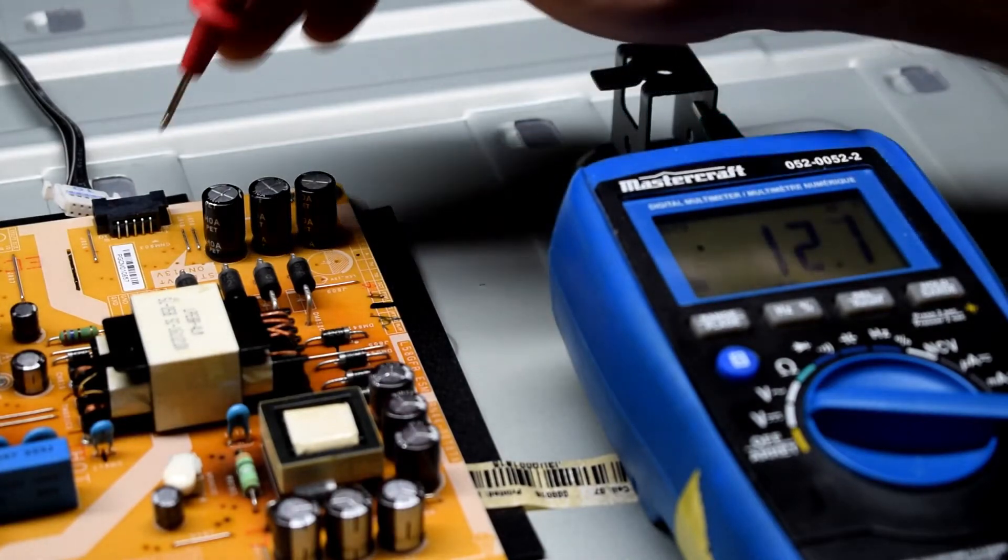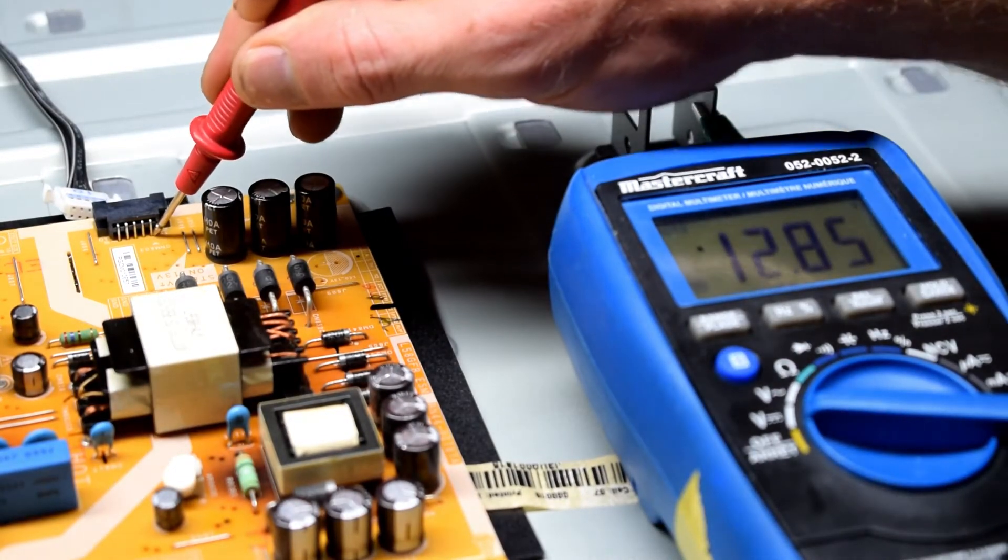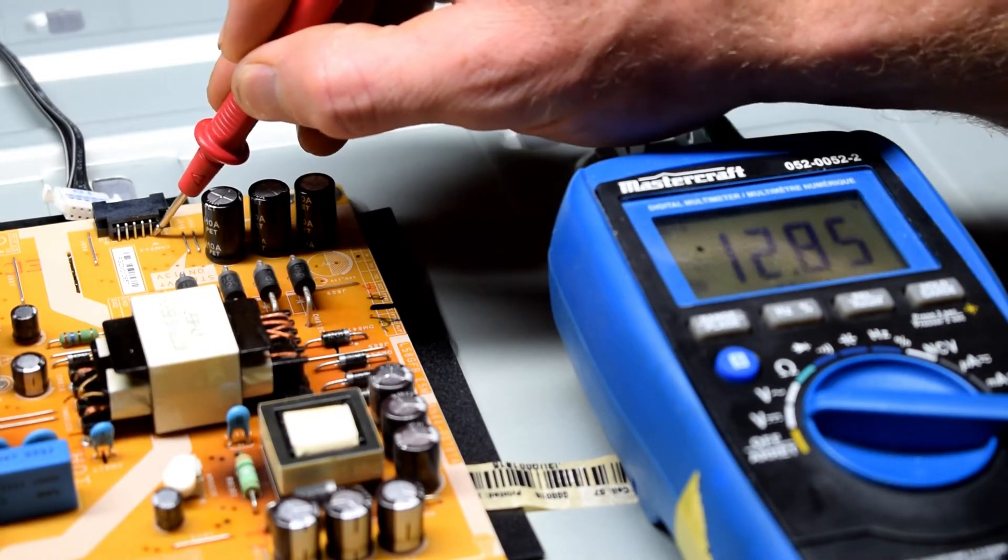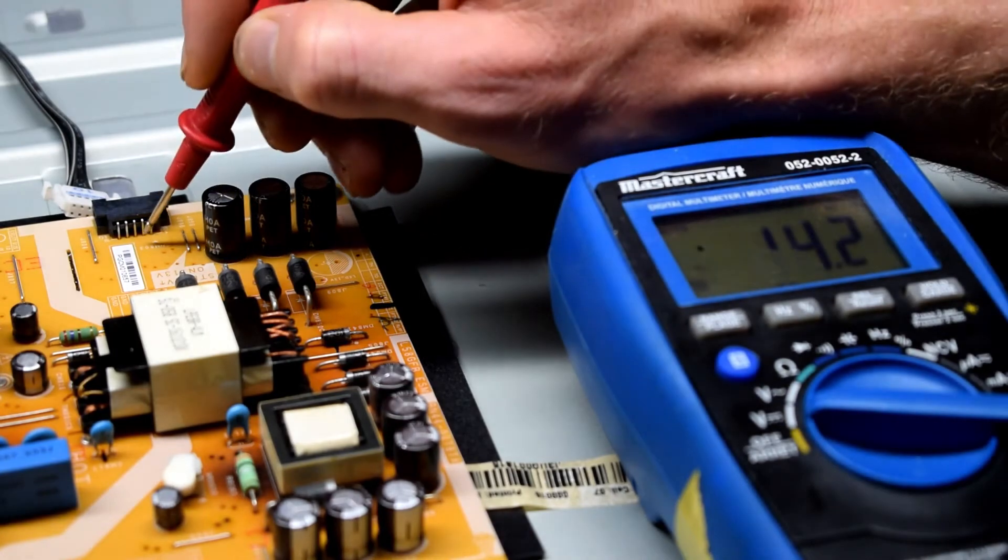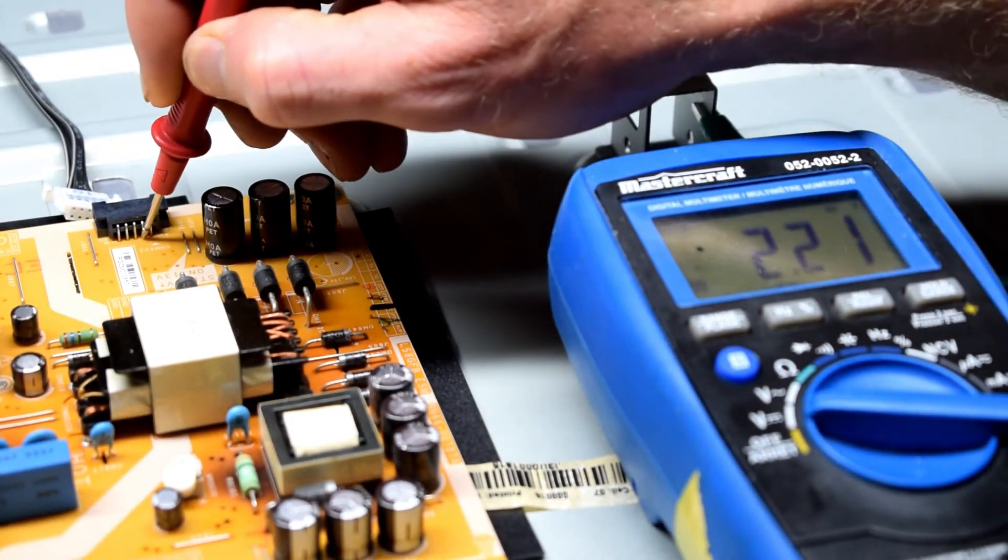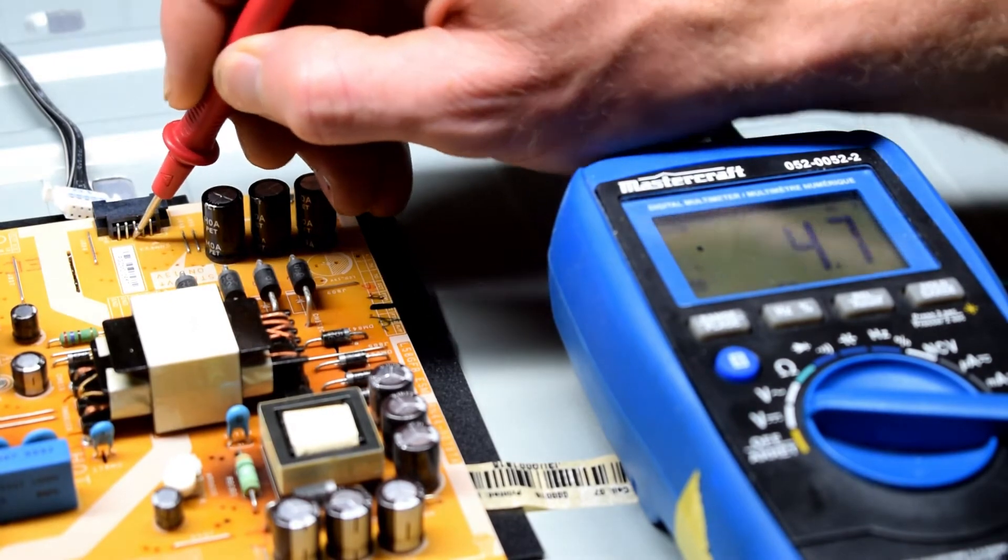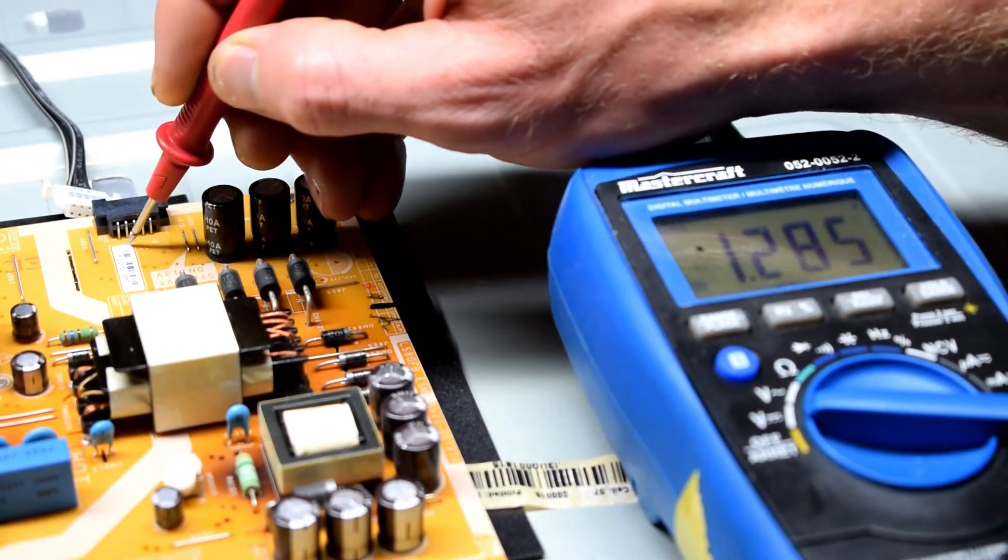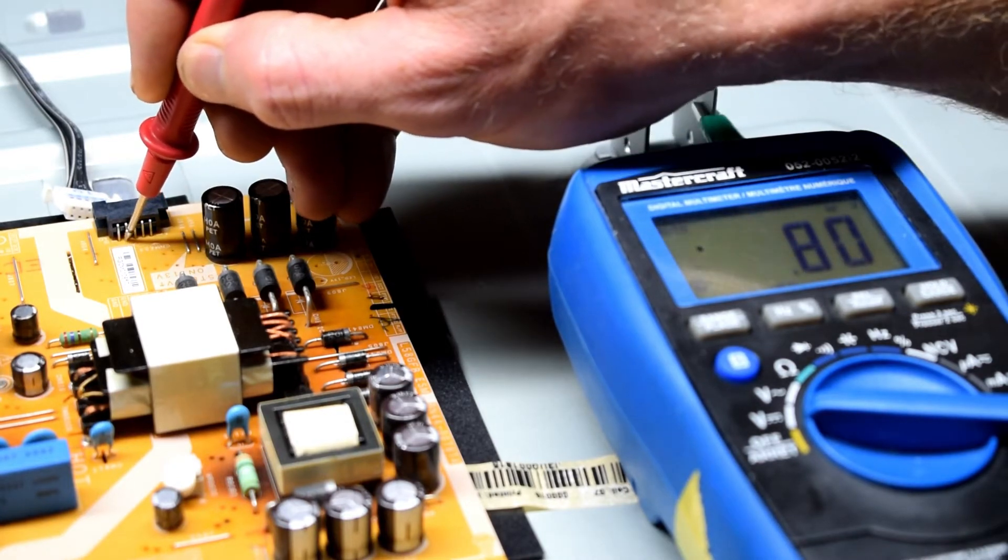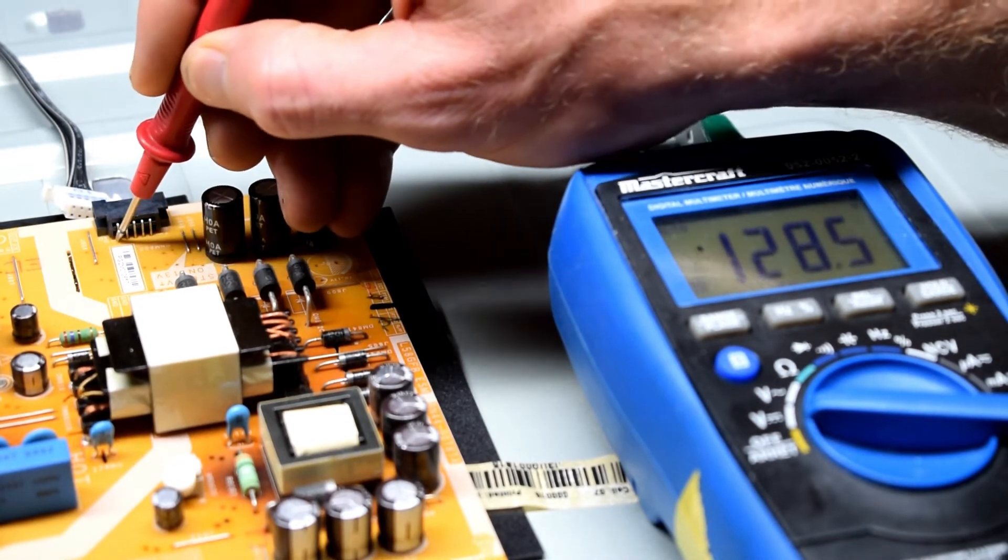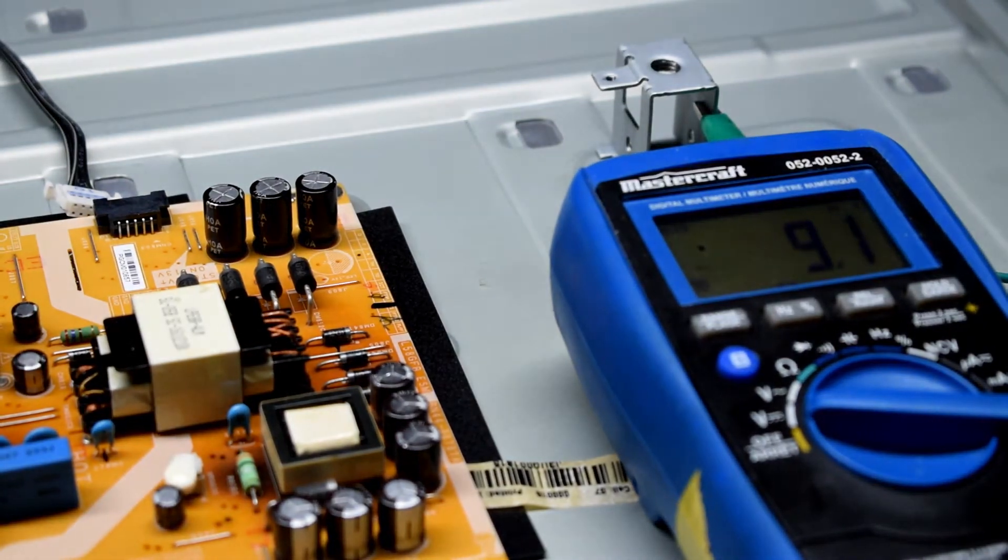So after replacing that chip, we get 12.85 which is about 13. Second one is 13 which is good. Last one's ground, so that's good.